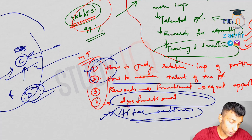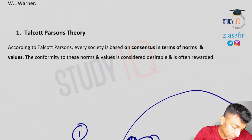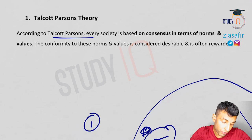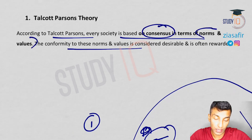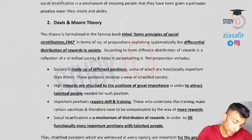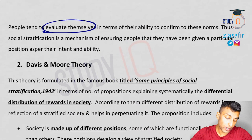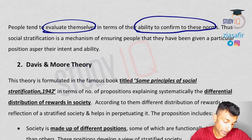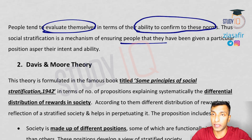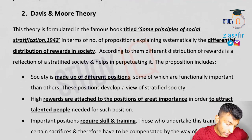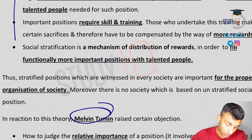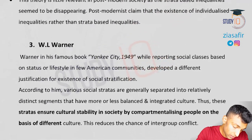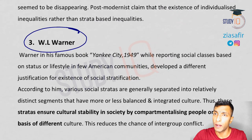So here already 30 minutes are over. Let me quickly summarize Parsons' theory. According to Talcott Parsons, every society is based on consensus in terms of norms and values. The conformity to these norms and values is considered desirable and often rewarded. People tend to evaluate themselves in terms of their ability to conform to these norms. Thus, social stratification is a mechanism of ensuring that people have been given a particular position as per their intent and ability. Next is Davis and Moore theory — all the propositions, Melvin Tumin's criticisms, and the clarifications will be in the next session along with W.L. Warner.